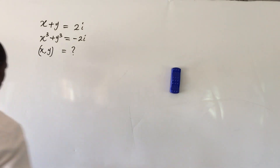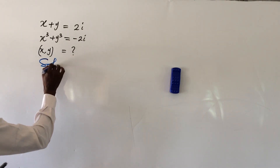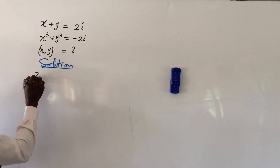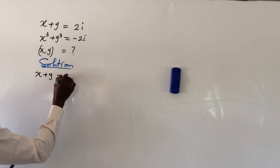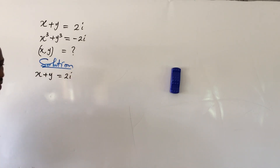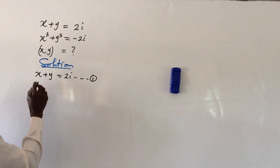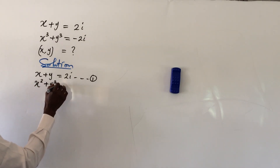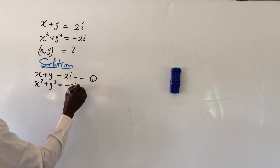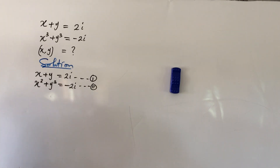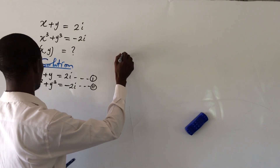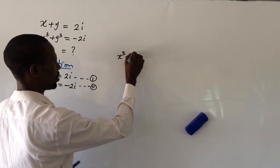Let's take down our solution. Equation 1 is x plus y equal to 2i, and equation 2 is x³ plus y³ equal to minus 2i. Now recall that we have the algebraic identity: x³ plus y³ equals (x plus y)(x² minus xy plus y²).